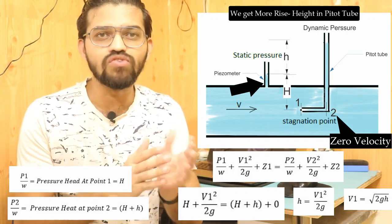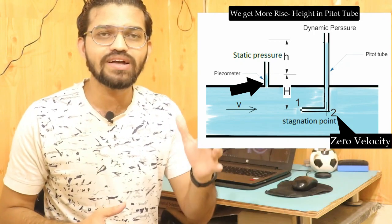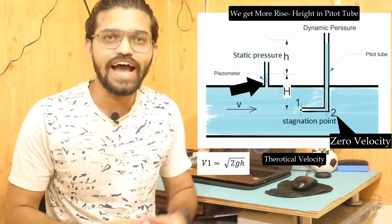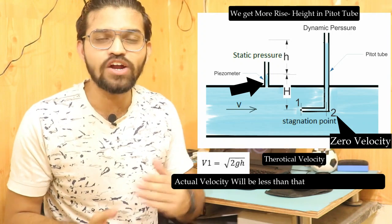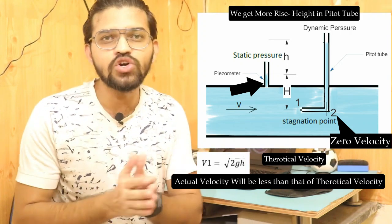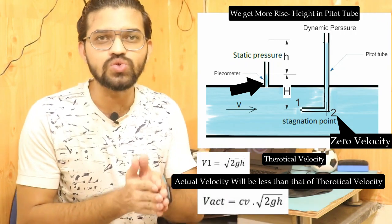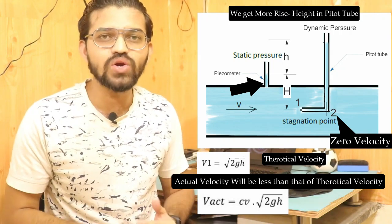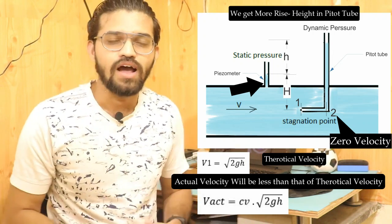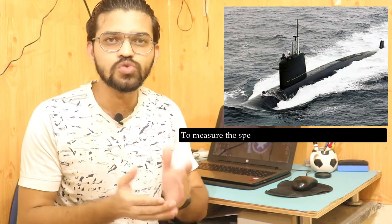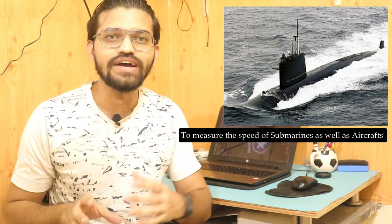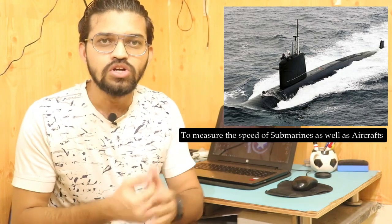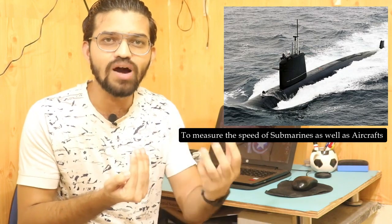The velocity v1 = √(2gh) is the theoretical velocity. To obtain the actual velocity, a coefficient of velocity cv is introduced, since actual velocity is always less than theoretical velocity. The modified formula becomes: v1 = cv × √(2gh), where cv is the coefficient of velocity. This is the formula used to calculate the velocity of flowing fluid using a pitot tube.